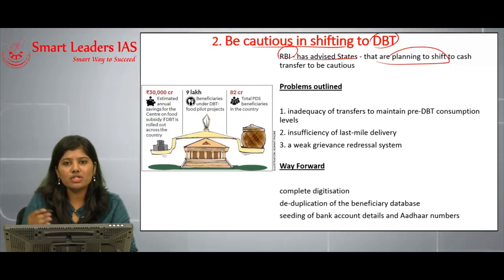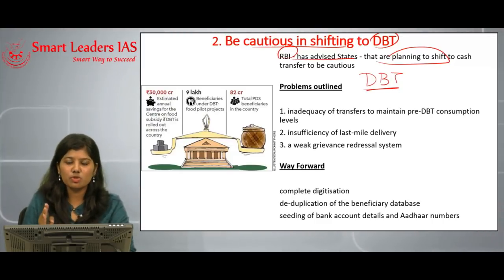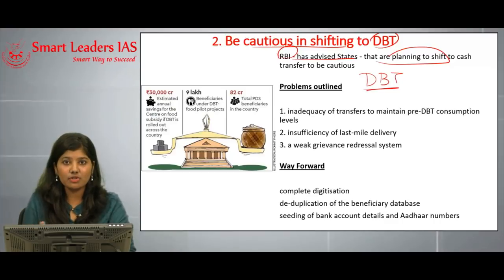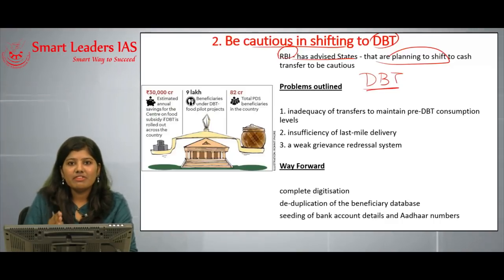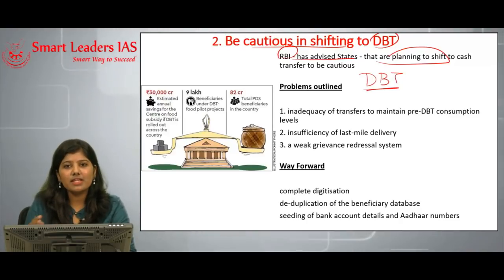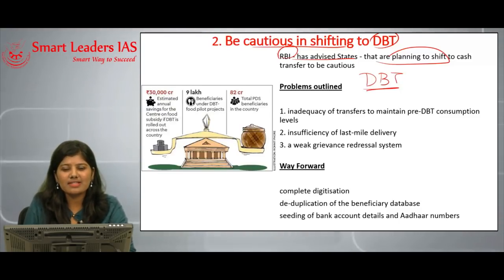The RBI warned states to be very careful while implementing cash transfers to households. DBT is being implemented for two major reasons. First, it is an alternative to the Public Distribution System, where people previously went directly to collect food grains at subsidized prices. DBT aims to reduce the physical movement of food grains from place to place and reduce leakage or wastage. It also accounts for the fact that food consumption patterns vary across and within states.